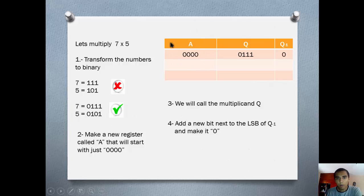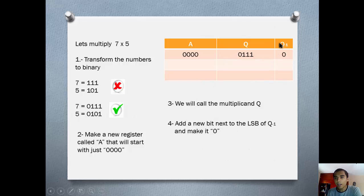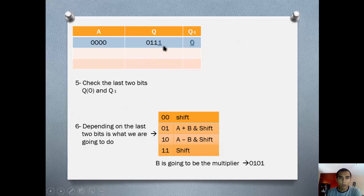Next, we need to make a register of 4 bits — 4 bits because we are doing 4-bit numbers — and it's going to be initialized to 0. This and the Q register are going to give us the final output, but we need to do this little chart. Then, we want to add a Q-1 bit. This is to make the algorithm work, because we are going to look at Q0 and Q-1 to know what to do. This is the chart where all the possibilities are listed.